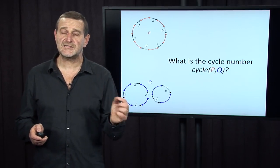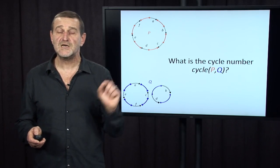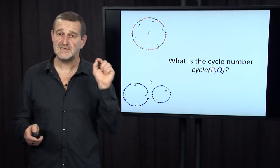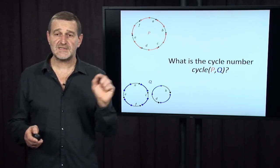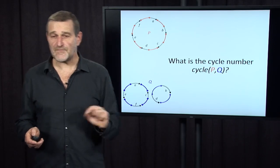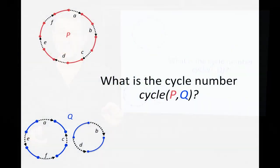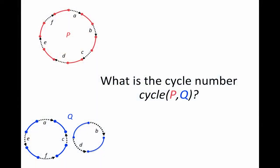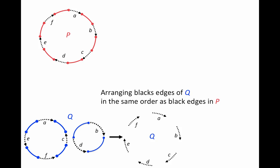Let's construct the breakpoint graph for these two genomes, P and Q. P consists of a single chromosome, and Q consists of two chromosomes. The first thing we do is arrange black edges of Q in the same order they are present in genome P. So it will be this arrangement of black edges in Q.